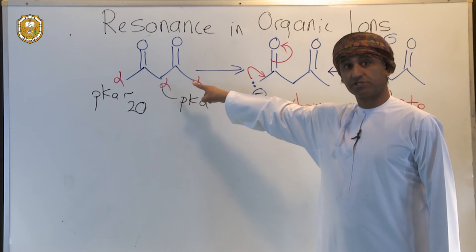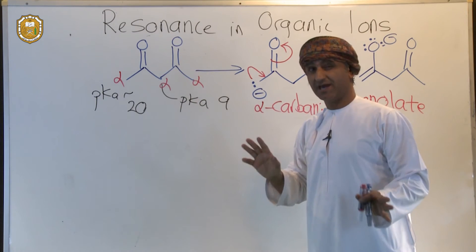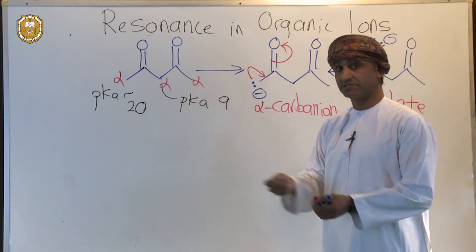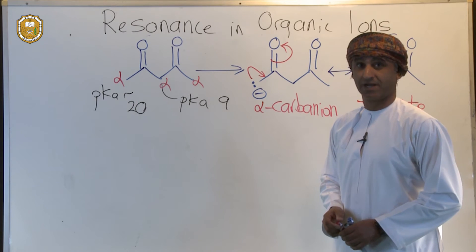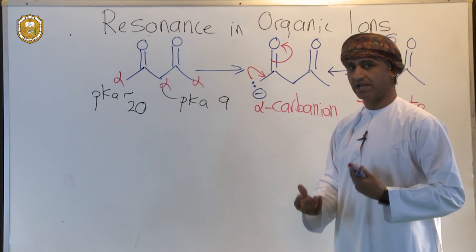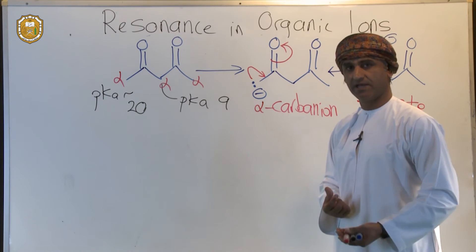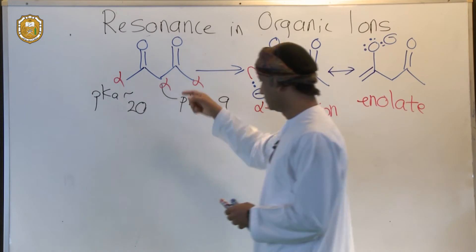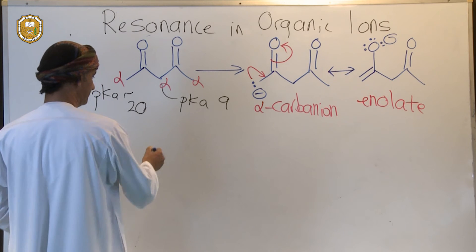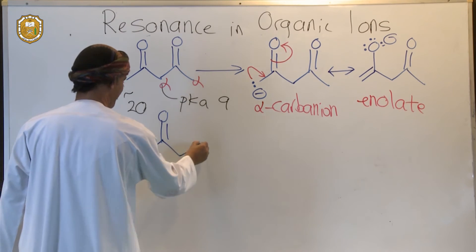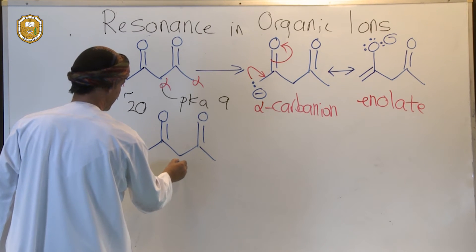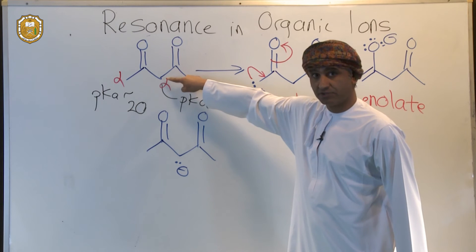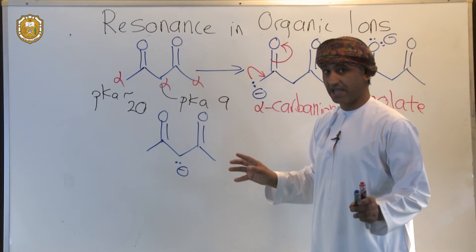What about the other alpha position, which is flanked by the two carbonyl groups? We've said already that the pKa is 9, which is significantly less than 20. So if you compare them, there's a huge difference in magnitude in pKa units. There must be additional resonance stabilization behind the greater acidity of that position relative to the normal alpha position. To do that, we need to draw the corresponding conjugate base — removing a proton from the position flanked by the two carbonyl groups — and if we do that, we get something like this.